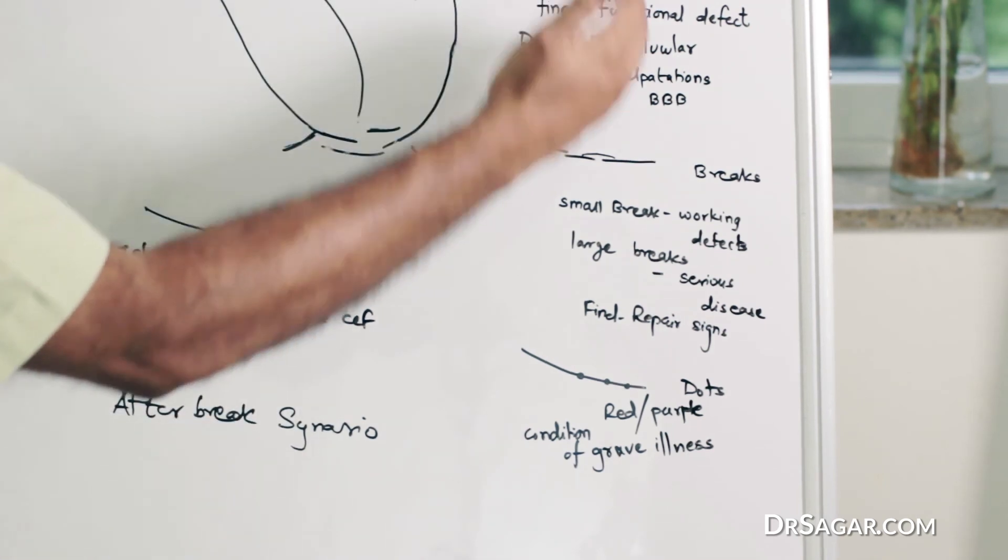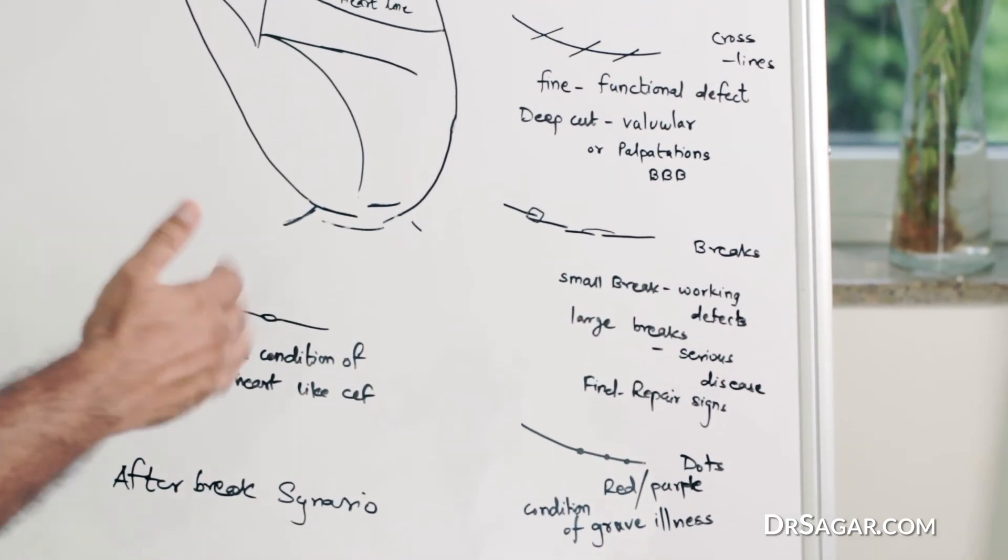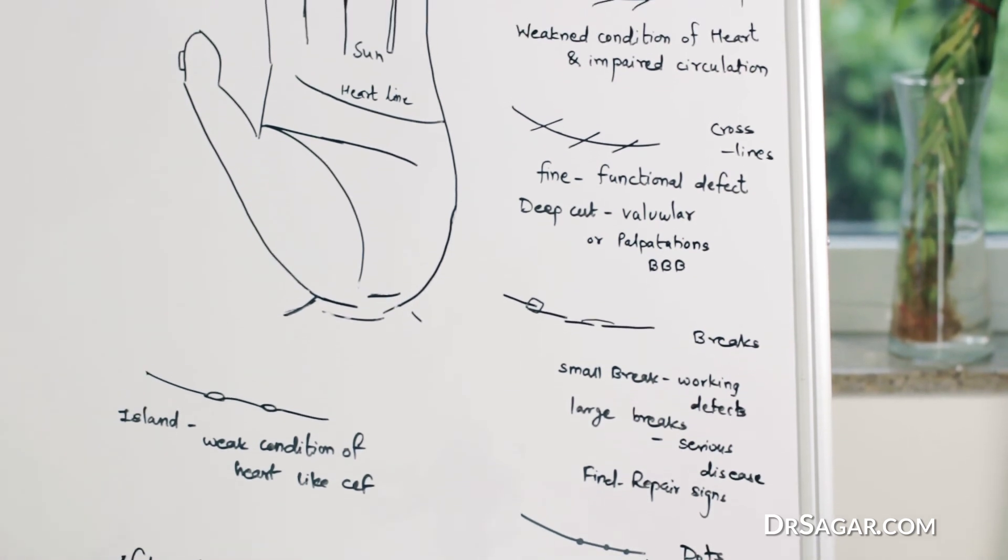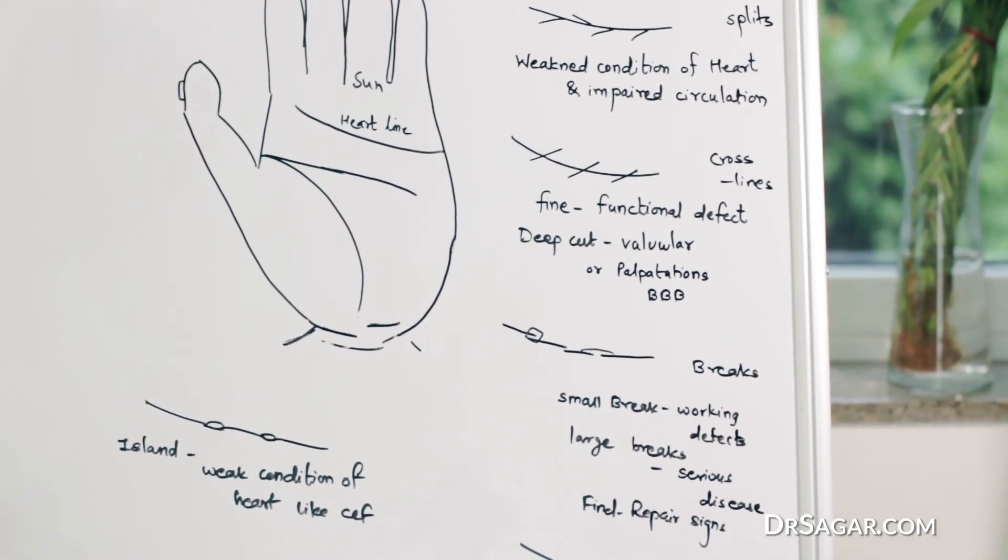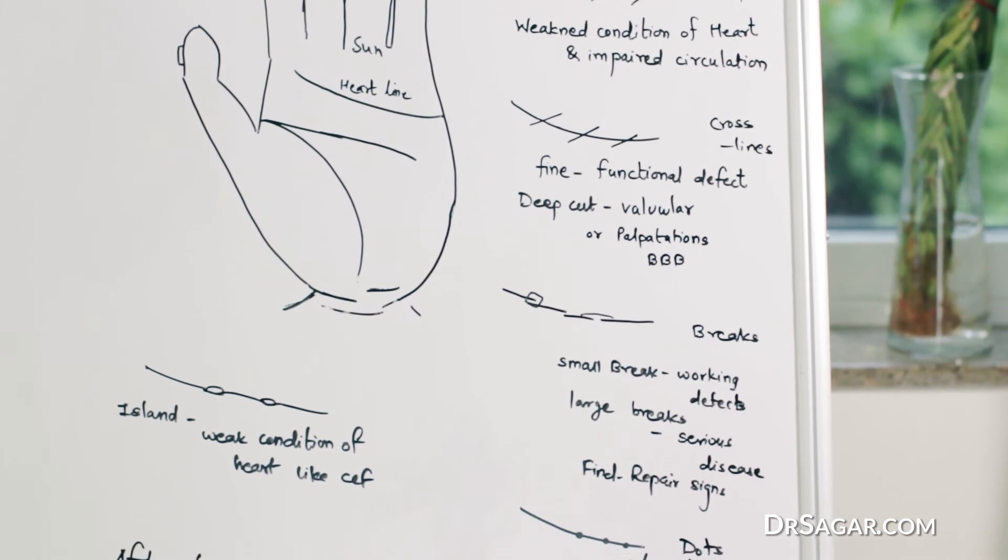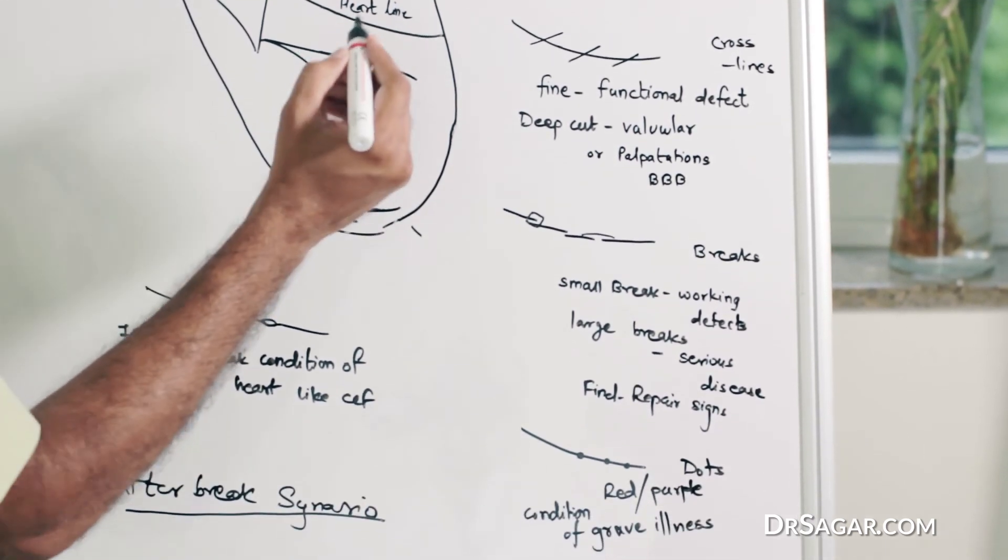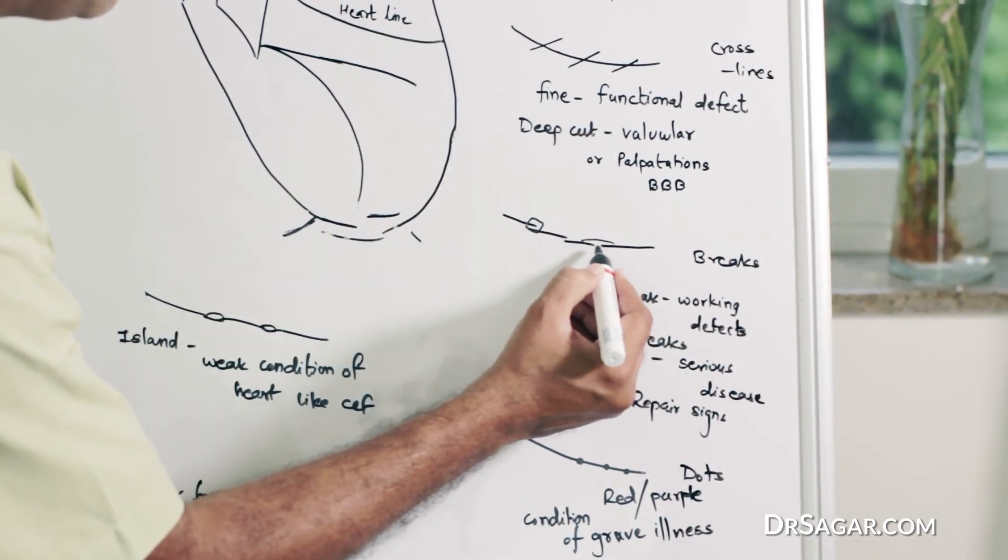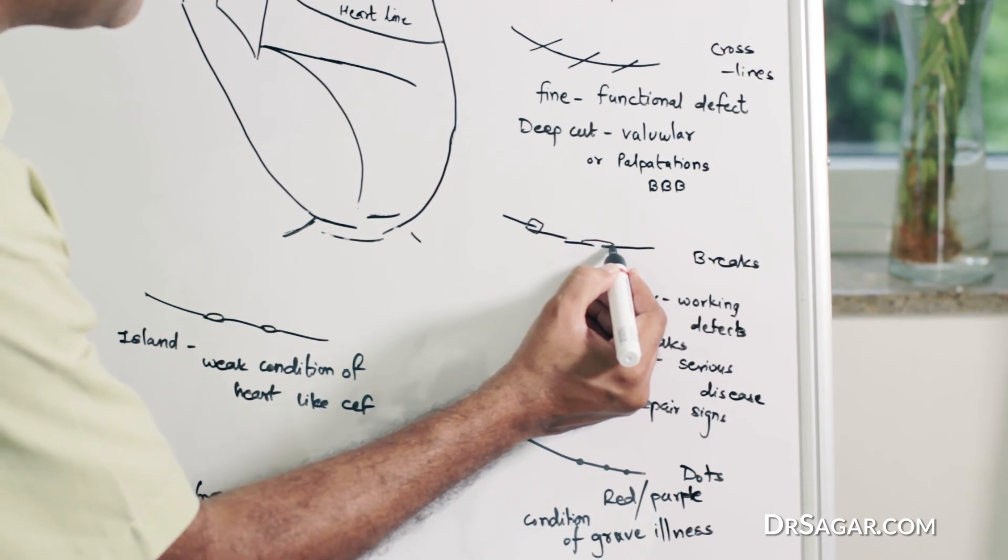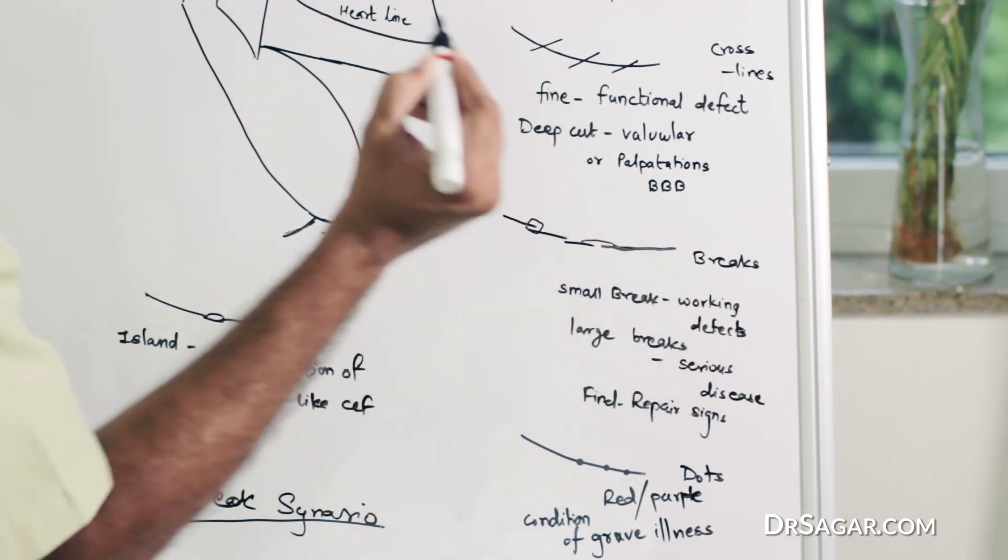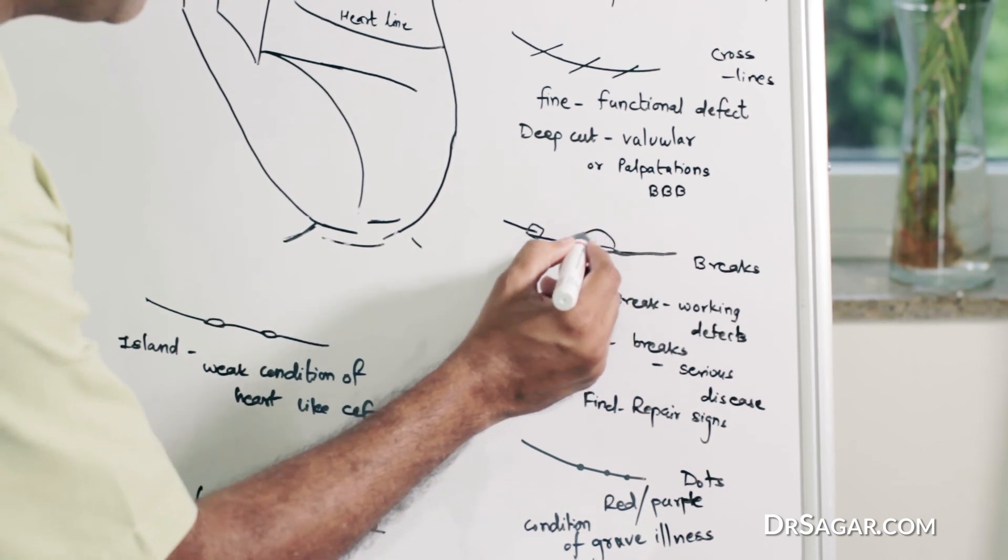So, these are all defects which may lead to heart disease. The important thing is after-break scenario. If the line is broken here, but afterwards it is going very straight, deep, then the problem is cured.